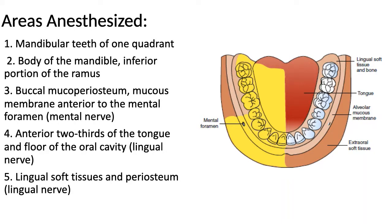When considering the tongue, the anterior two-thirds of the tongue as well as the floor of the oral cavity on that respective quadrant is anesthetized. Lingual soft tissues and periosteum that are being supplied by the lingual nerve are also anesthetized by this nerve block.